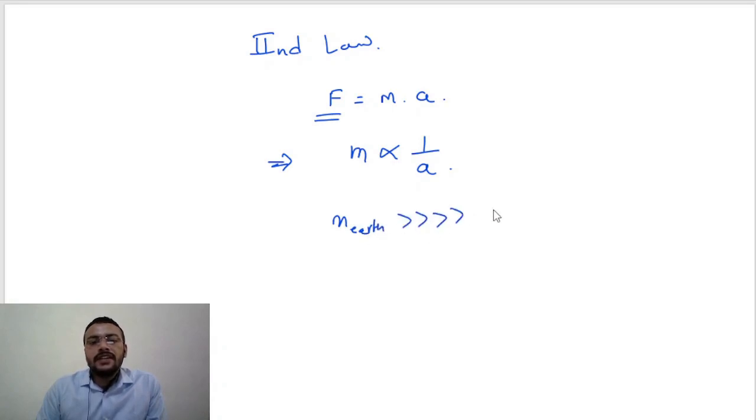is very very very large as compared to mass of the ball. So acceleration for earth is negligible as compared to the acceleration of ball. So we see every time the ball comes to the earth, the earth never goes up to the ball. This is the reason, because the acceleration of earth is negligible as compared to the acceleration of ball.